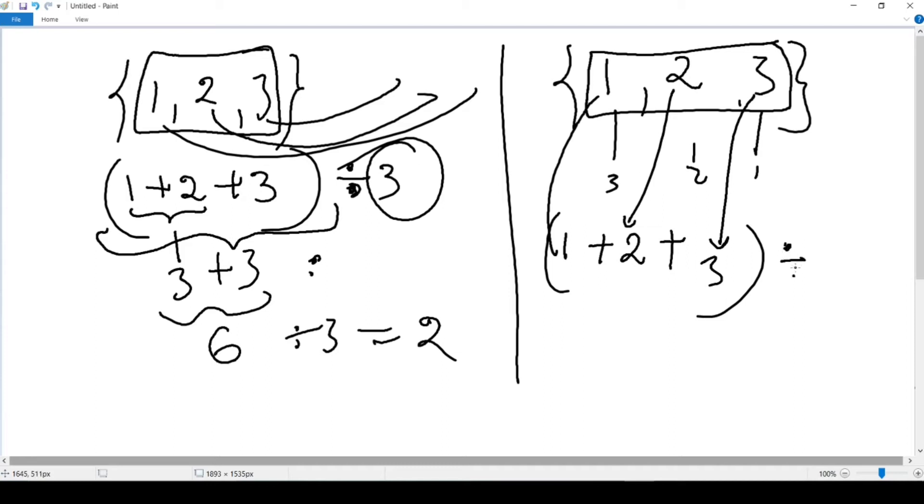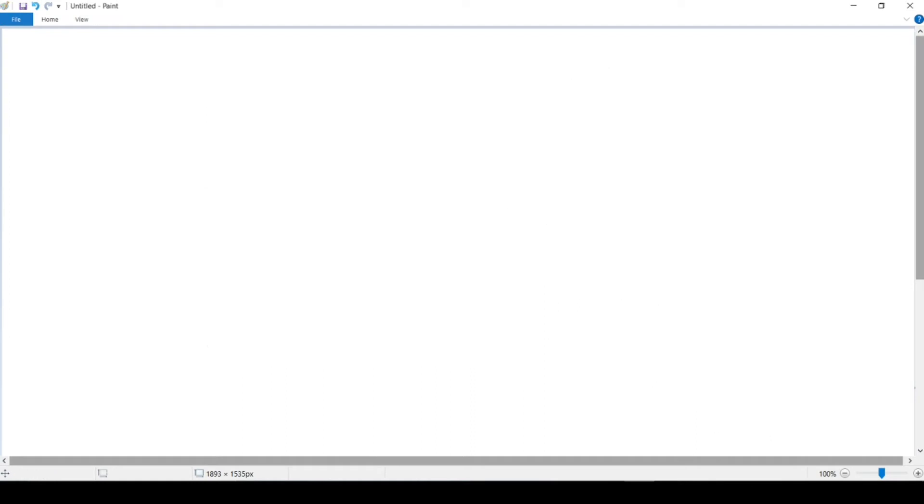So I perform my operation inside the parenthesis: 1 plus 2 that's 3, plus 3 that's 6, and divide by 3. My final answer is 2. So another one: what is the average of my set {7,7,7,7}?